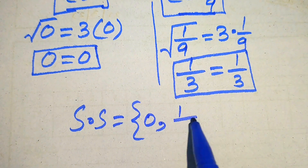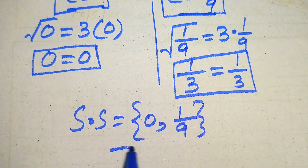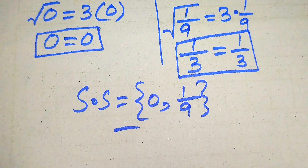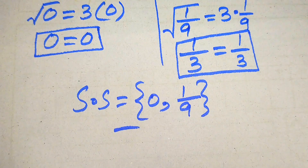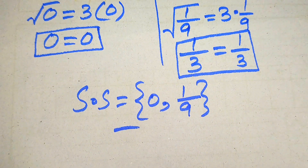Both roots satisfy the given equation, so the final solution is c equals 0 and c equals 1 over 9. The roots which do not satisfy the given equation are called extraneous roots, and the roots which do satisfy it are called solutions. Here, both 0 and 1 over 9 are solutions. This is our final answer. Thank you so much for watching — please subscribe to my channel for more exciting videos.